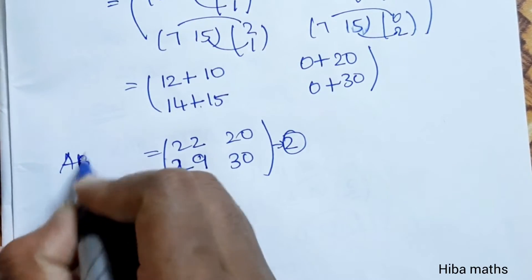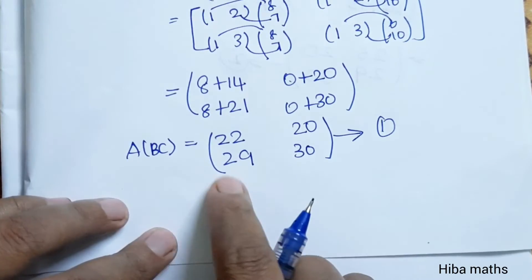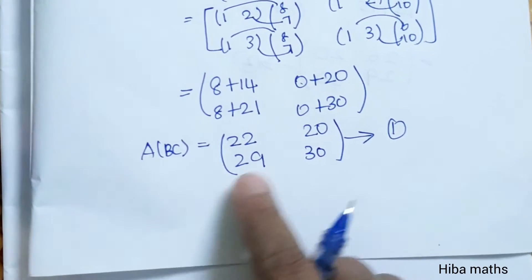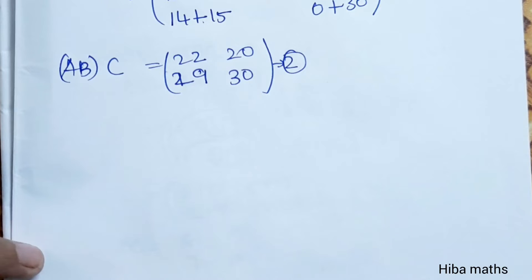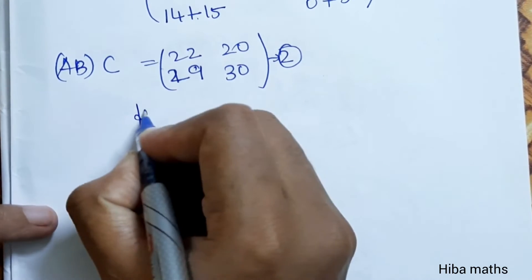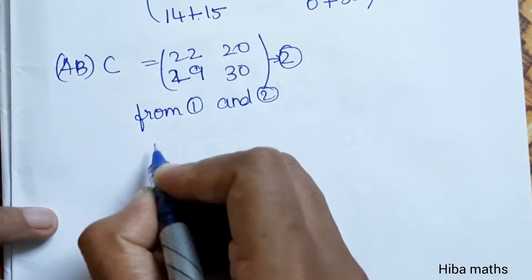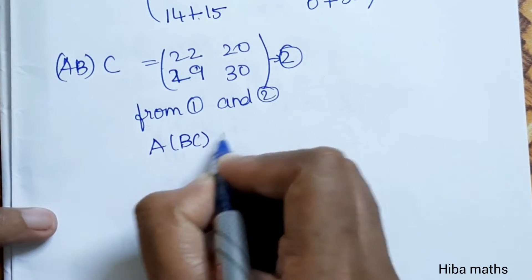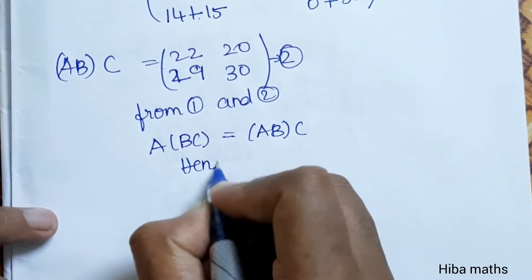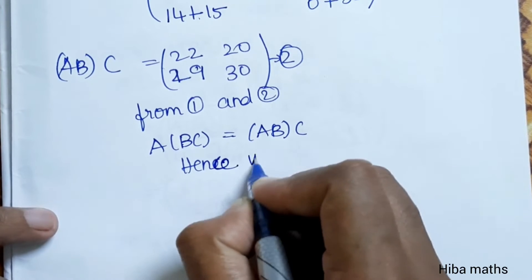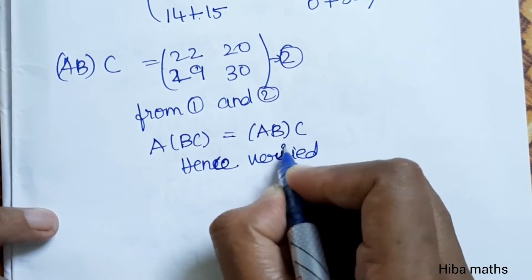The first result A(BC) = [22,20; 29,30] and second result (AB)C = [22,20; 29,30]. From result 1 and result 2, A(BC) = (AB)C. Hence verified.